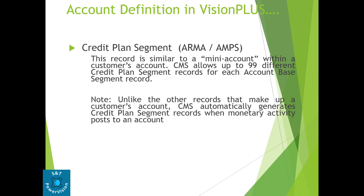What is the credit plan segment? This record is similar to a mini account within customer accounts. CMS allows up to 99 different credit plan segment records for each account base segment record. Unlike other records, CMS automatically generates a credit plan segment record when monetary activity goes to an account. We have already discussed these topics in a previous video on credit plan master — you can watch that video for more details.